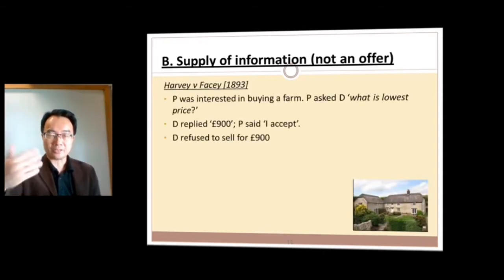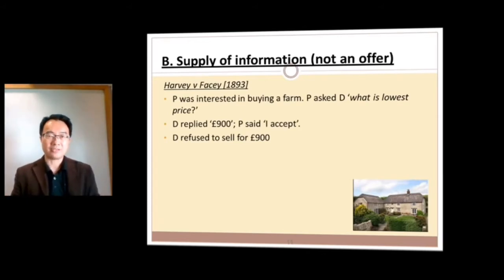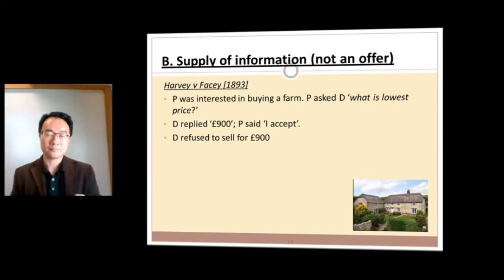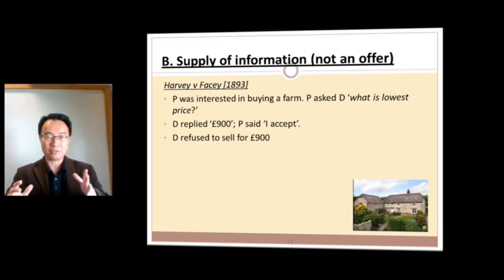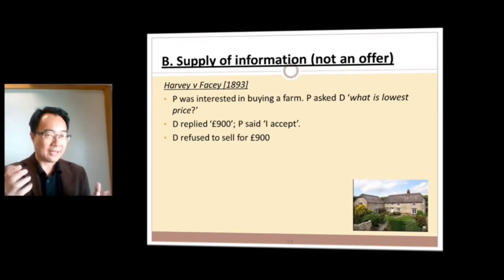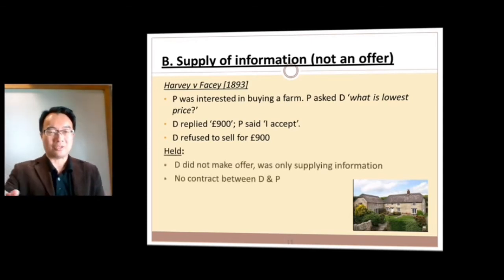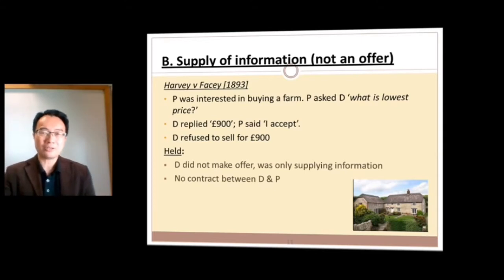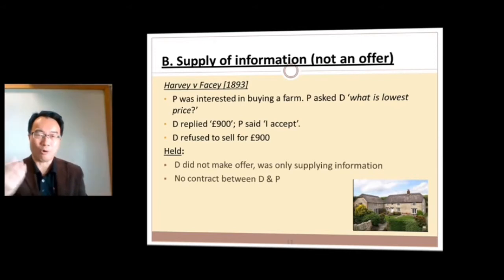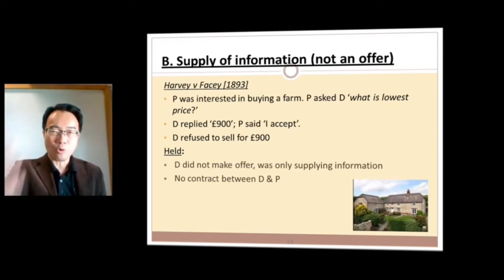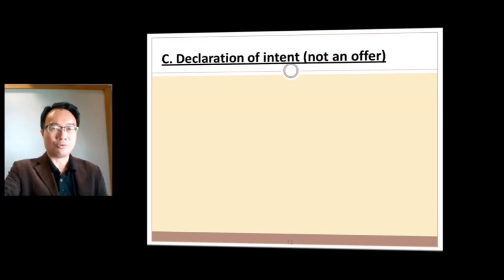Sometimes there are supplies of information. In the case of Harvey v Facey, Harvey wanted to buy a farm and asked Facey what was the lowest price. Facey said £900. Harvey said 'I accept,' but Facey said he didn't make an offer. The judge agreed — he was only giving information. Saying £900 doesn't mean he's offering to sell at £900. Since there's no offer, there can't be an acceptance, and therefore no contract.